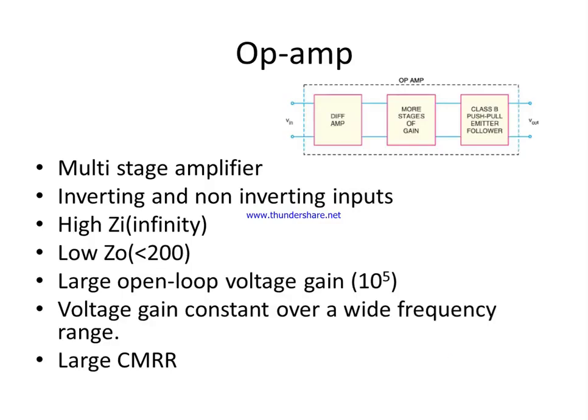Good morning. An operational amplifier is a multi-stage amplifier containing different stages, and the first stage is a differential amplifier — we made a detailed discussion on the working of the differential amplifier. Now we are discussing some important properties common to all op-amps. The first property is that it is a multi-stage amplifier with a differential amplifier as the first stage.